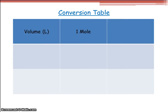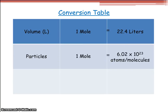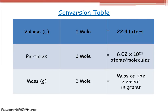Conversion table — here's another thing you can record in your notes. When I want to convert volume to moles, every mole has 22.4 liters of gas. When I want to convert particles to moles, one mole has 6.02 times 10 to the 23rd atoms or molecules, whatever particle we're using. And when converting moles to grams, we use the periodic table, which gives you the mass of the element in grams. For oxygen, the mass would be 15.999 — a lot of times we'll just use 16.